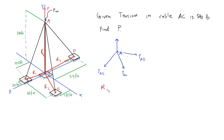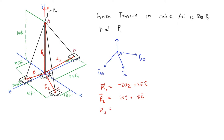To define these position vectors: R1 has a negative X component of 20 feet, so negative 20i, zero in the Y direction, and positive 25 feet in Z, so plus 25k. R2 is positive 60i. R3 is negative 20i minus 74k. R4, the simplest of the group, is positive 100j.